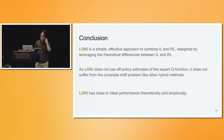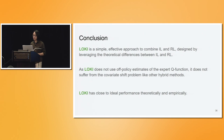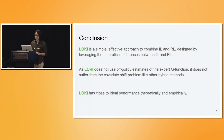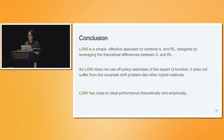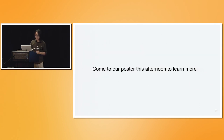In conclusion, LOKI is a super simple and very effective method to combine imitation learning and RL to speed up policy learning. Because it doesn't use off-policy estimates of the expert's Q function like other hybrid methods, it avoids the covariate shift problem. Empirically, LOKI achieves performance close to the ideal setup. If you have further questions, please come to our poster. Thanks.